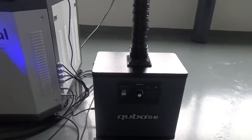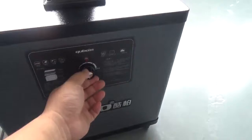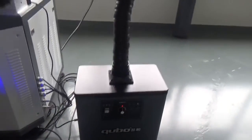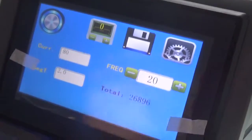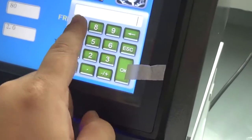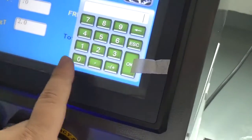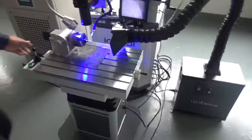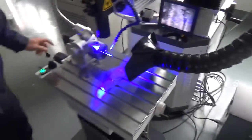The dust collection fan. Turn on the machine power. This is used to control the speed of the dust collection fan. Then save it, now you can walk. Okay.